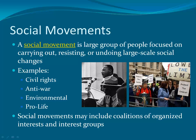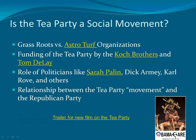Social movements are very closely related to interest groups, although generally larger and somewhat more bottom-up. A social movement tends to be a large group of people focused on carrying out, resisting, or undoing large-scale social changes. Examples include the civil rights movement, the anti-war movement, the environmental movement, and the pro-life movement. Social movements may include coalitions of organized interests and interest groups. A recent example, questioned as to whether it is a true social movement, is the Tea Party.